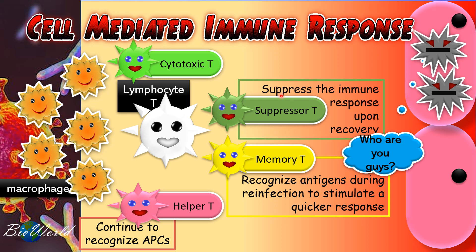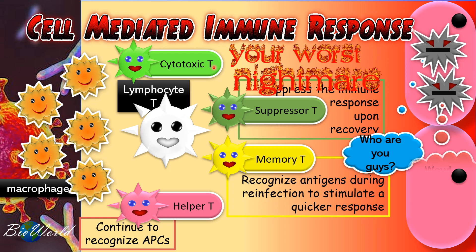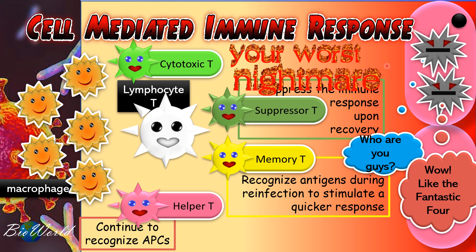The suppressor T is necessary at the end of the infection when we are recovering. Because once we are recovering, the number of pathogens would have become minimum, so we would not require that many immune cells anymore. But the most important of all in the cell-mediated immune response is the cytotoxic T, because the cytotoxic T is what is going to cause a lot of problems to the pathogens that are hiding inside the cell.